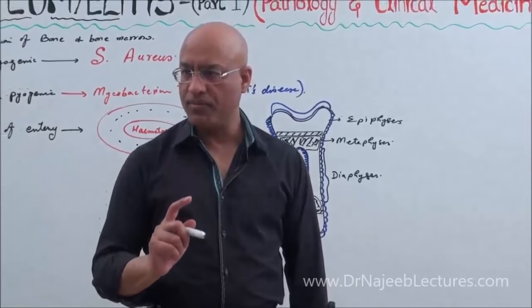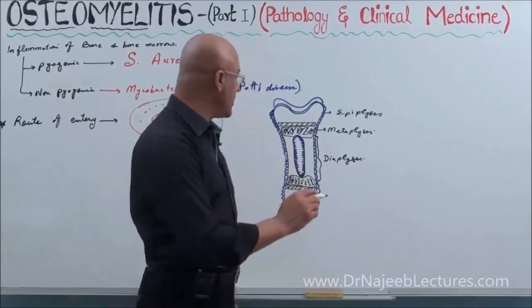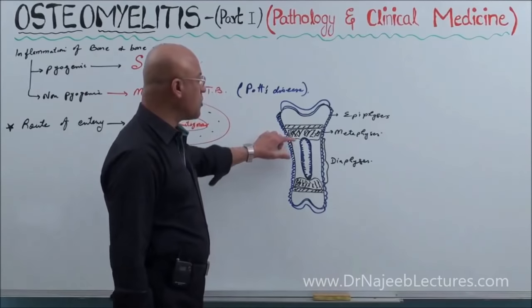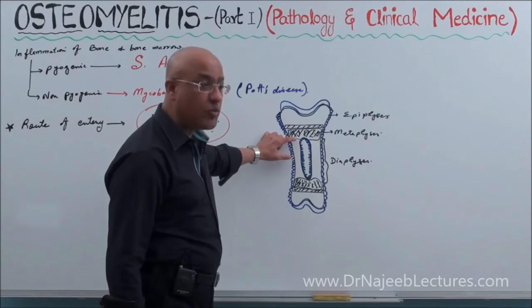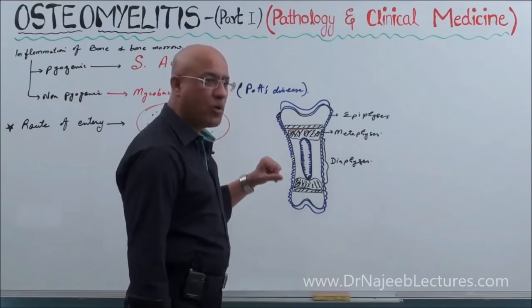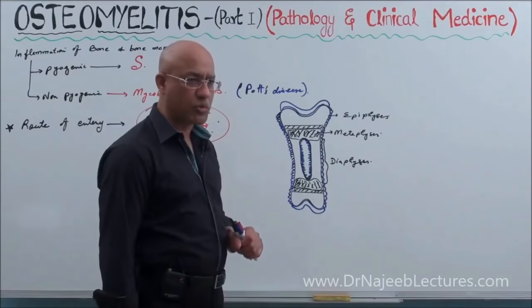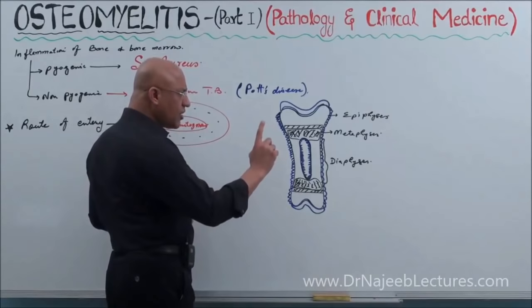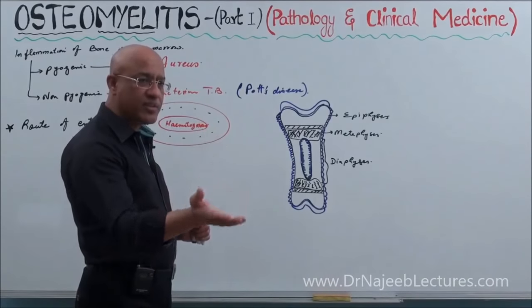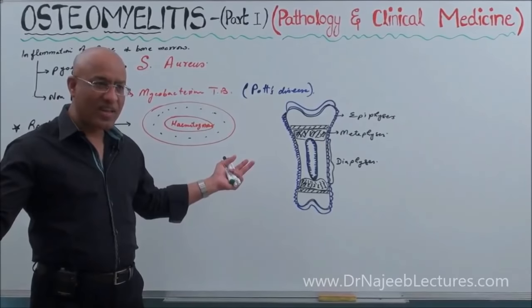The metaphysis is the growing part of the diaphysis just under the epiphyseal plate. In children, the most common site in the bone to get involved in osteomyelitis is the metaphysis. This is because the metaphysis has a very peculiar and high level of blood flow — it is highly vascular — and this vascular arrangement predisposes it so that bacteria circulating in the blood love to settle there, especially Staphylococcus aureus.